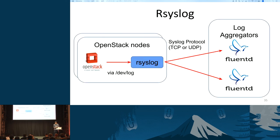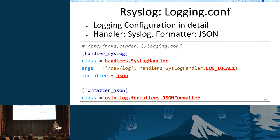The second way is rsyslog. OpenStack components will send logs to local rsyslog. Then local rsyslog will send logs to aggregators by syslog protocol over TCP or UDP. Logging.conf is a file used to configure logging in detail. Here is an example of logging.conf to send logs to rsyslog in JSON format. Output to rsyslog is configured in the handler section. The syslog handler is specified here, and the syslog facility is set to local1.